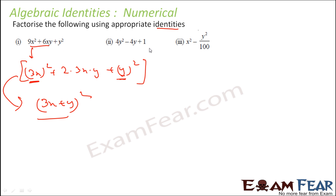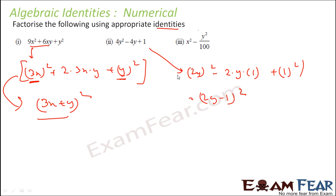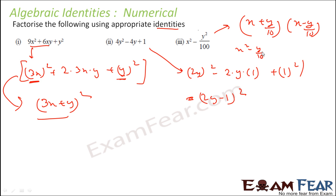Similarly, 4y² − 4y + 1 can be seen as (2y)² − 2×(2y)×1 + 1², which is nothing but (2y − 1)² using the algebraic identity. For x² − y²/100, this is a² − b² where b = y/10, so we write this as (x + y/10)(x − y/10), since a² − b² = (a + b)(a − b).